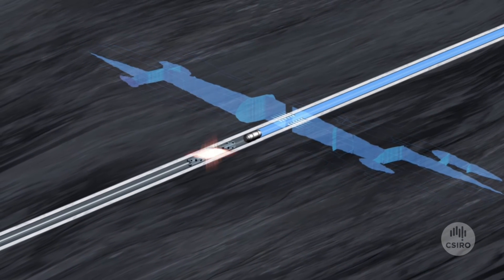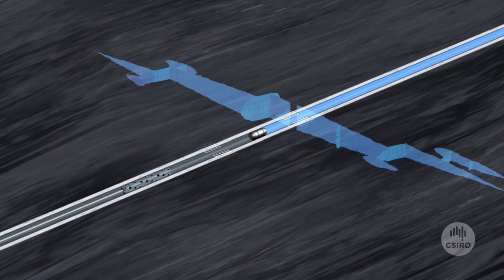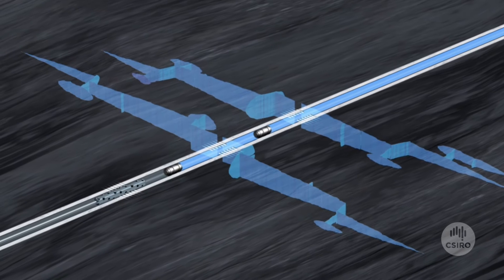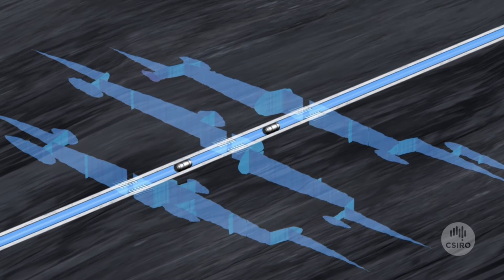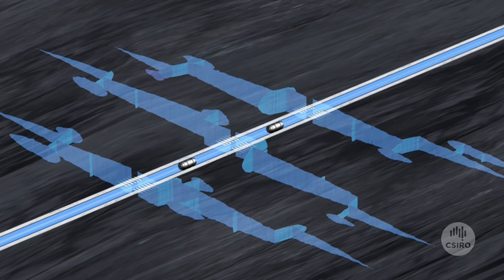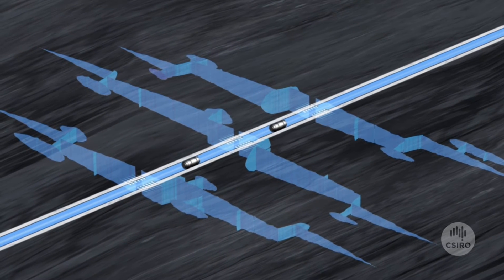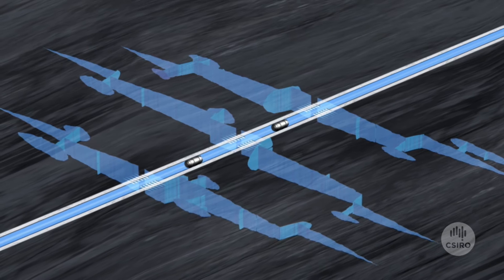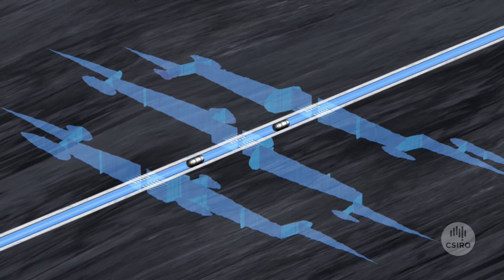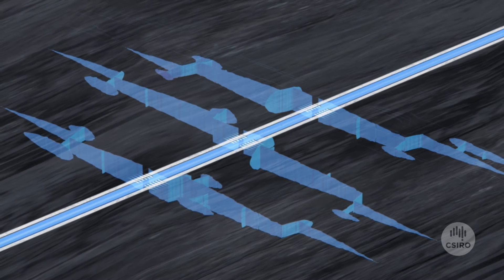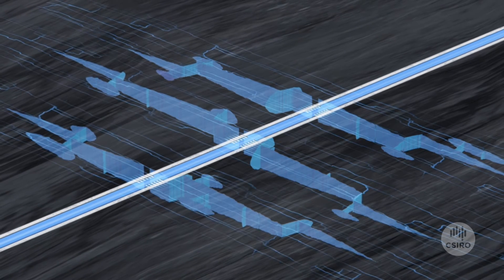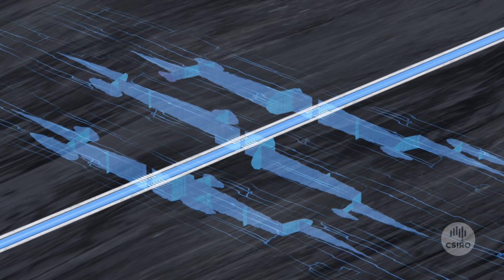This process is repeated several times within the horizontal portion of the well, with each fracturing stage separated by a plug. At the end of the hydraulic fracturing process, the plugs are removed and production can start.